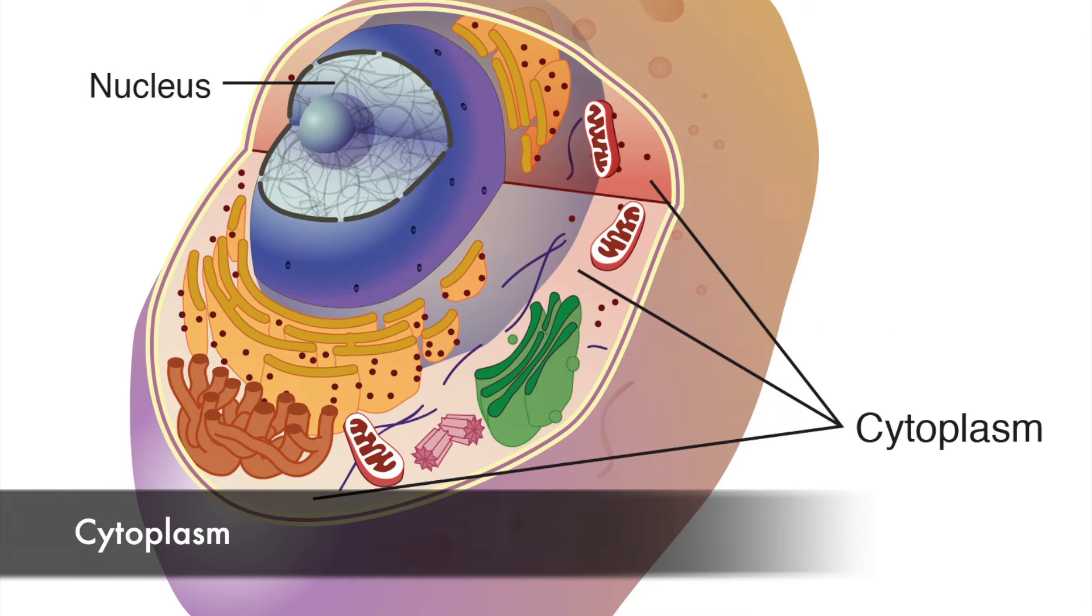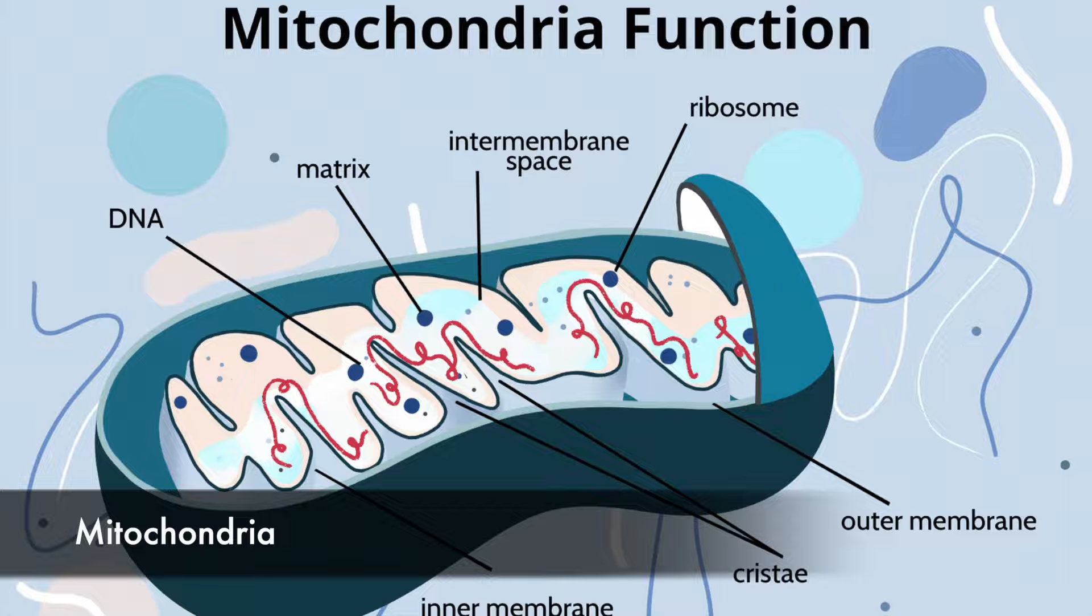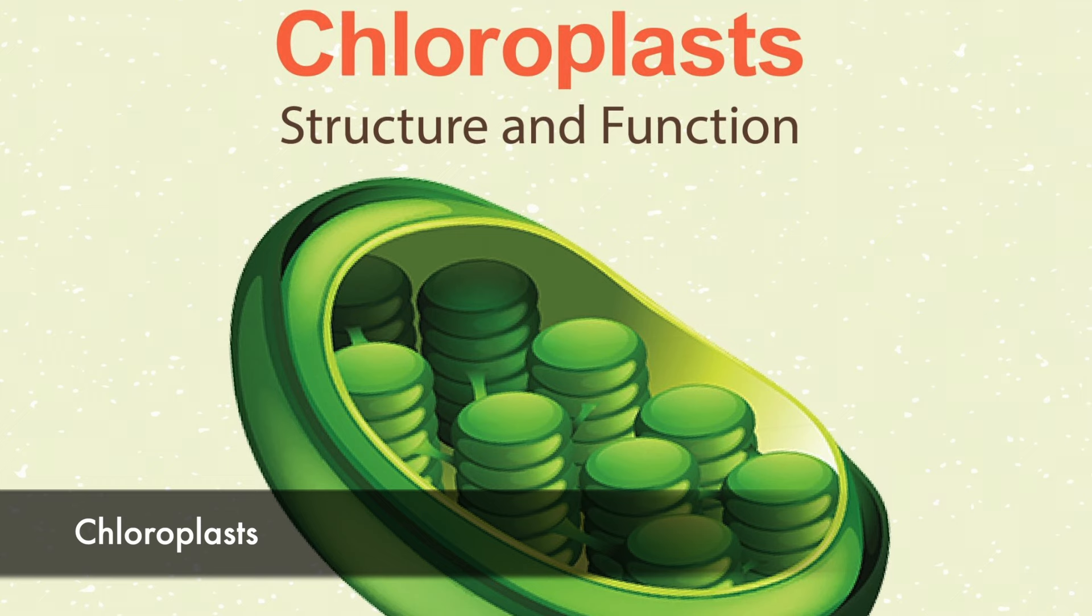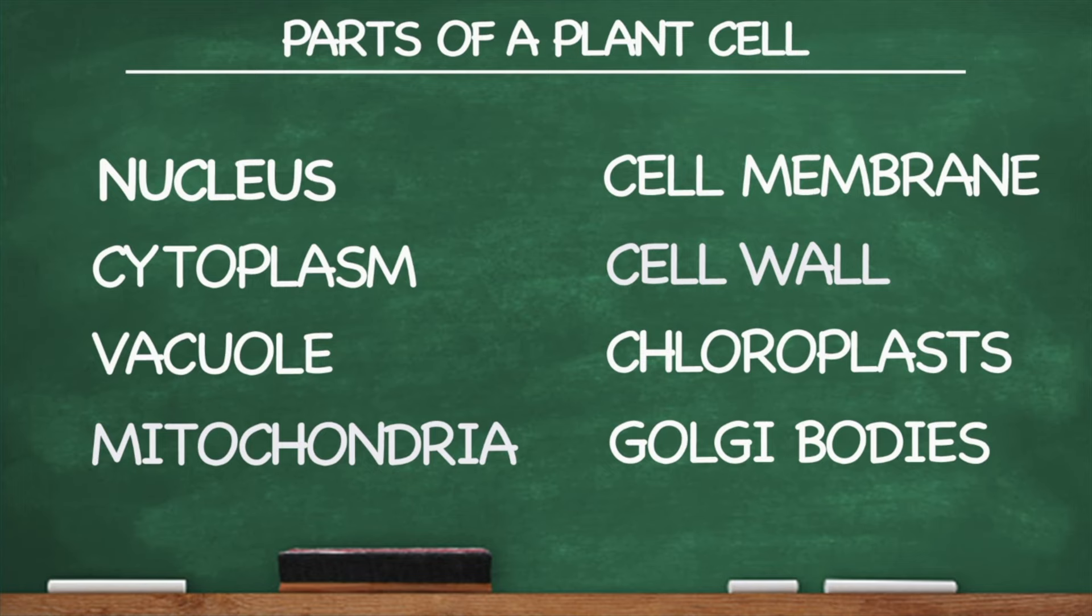Nucleus, cytoplasm, vacuole, mitochondria, cell membrane, cell wall, chloroplasts, golgi bodies. These are the parts of a plant cell. Again.